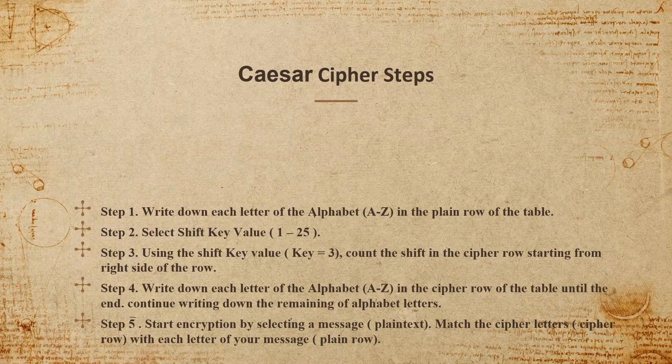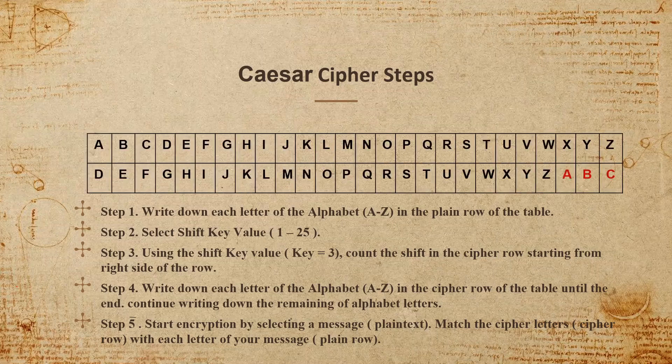Here is the table. The top row is called the plain row — it represents the standard message or plain text before being encrypted. The second row is the cipher row, and we use these letters to encrypt the message. You can notice the shift is already happening in the second row.